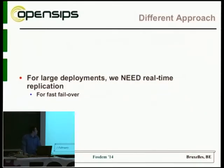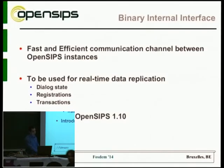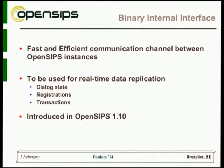For large deployments processing significant traffic, we concluded we needed real-time replication and couldn't rely on database synchronization. So we built a binary internal interface, introduced in OpenSIPS 1.10, designed as a fast and efficient communication channel between two or multiple OpenSIPS instances. This interface is data-agnostic — it doesn't care what you're synchronizing. So far we use it to synchronize dialogue states, registrations, and transactions, but it's up to the developer to implement whatever data needs to be replicated in real time.